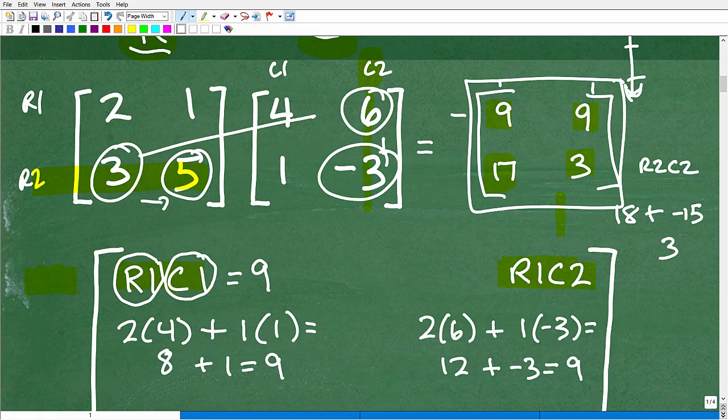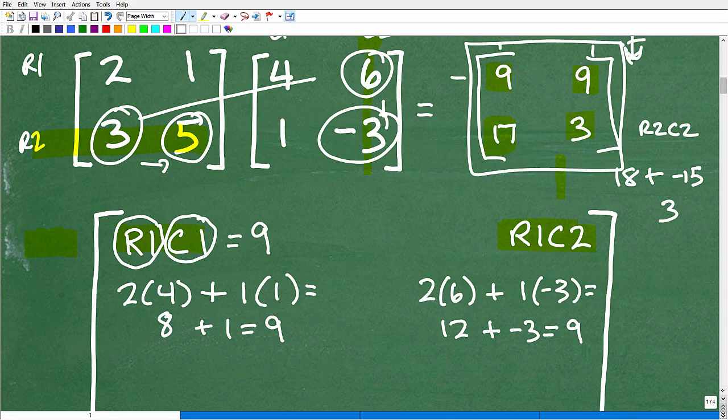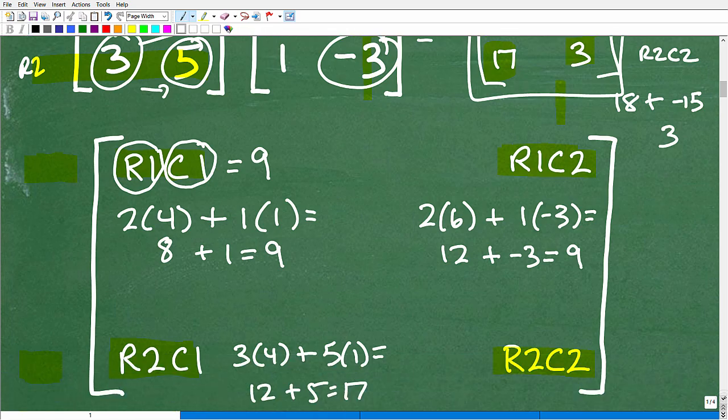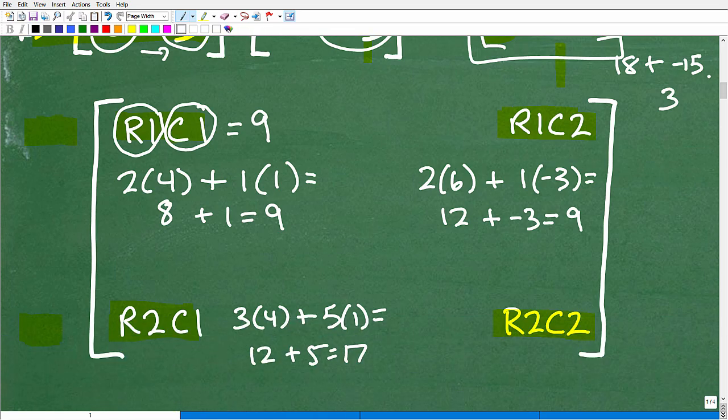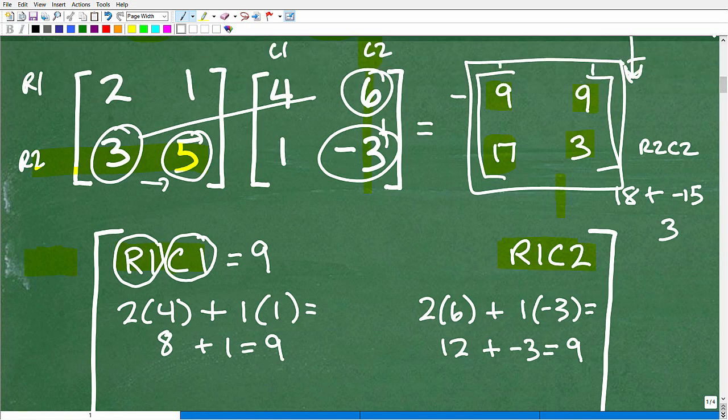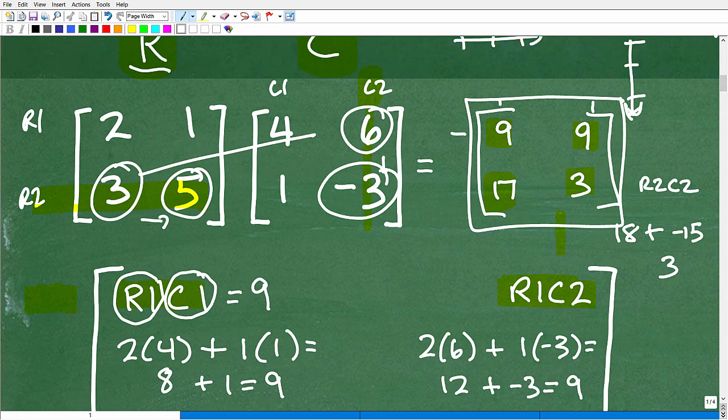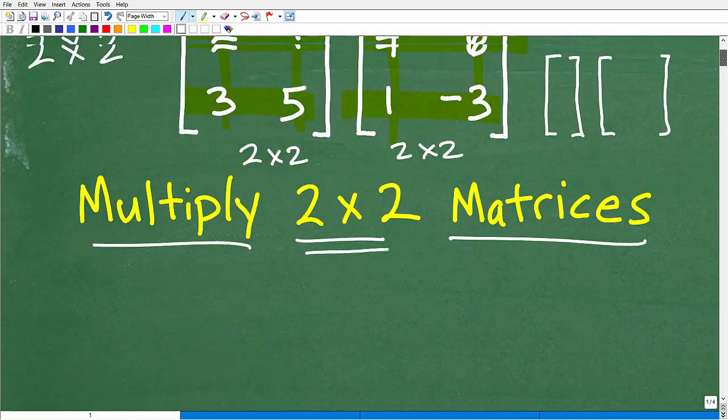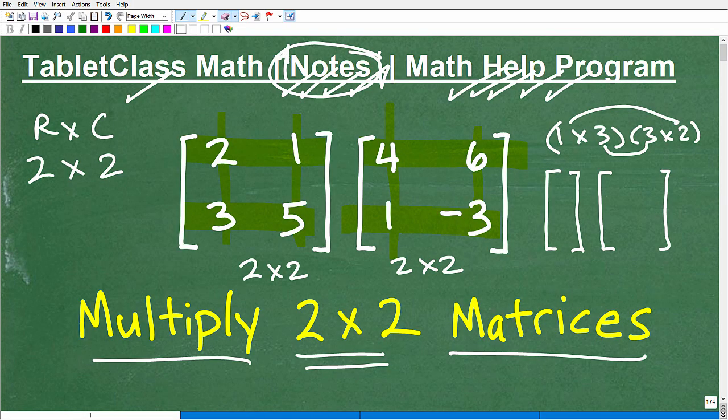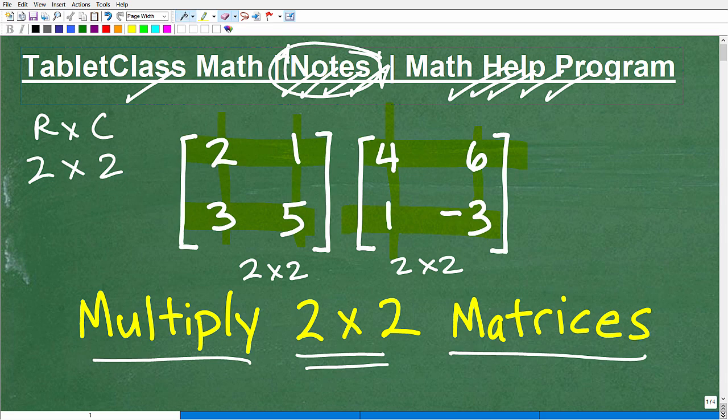We're multiplying a 2 by 2 matrix. The answer is going to be a 2 by 2 matrix. Anytime you're doing something other than a 2 by 2, if you can multiply any matrix, you're going to do the same procedure. It requires a lot of concentration. You've got to be super neat and double, triple check your work. It's very normal to make mistakes when you're multiplying matrices. But this is how you do it.